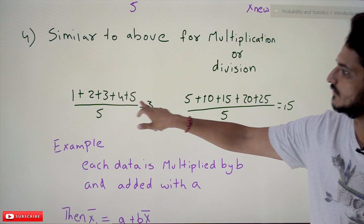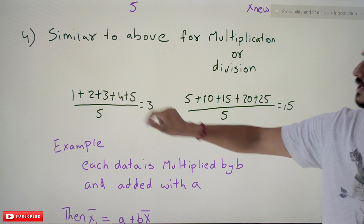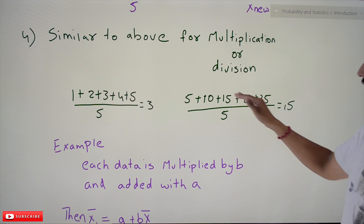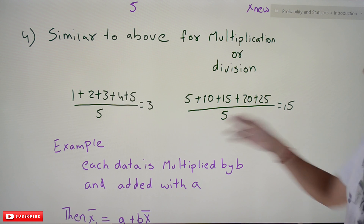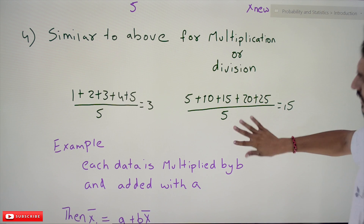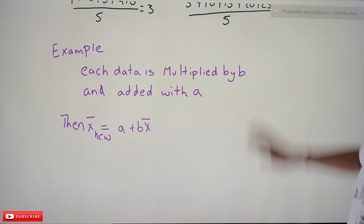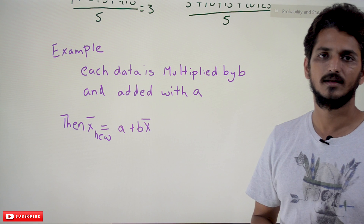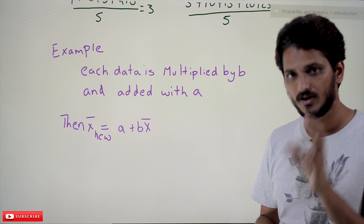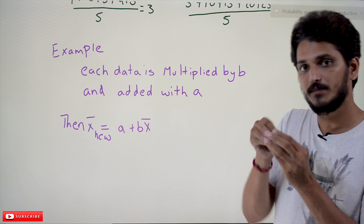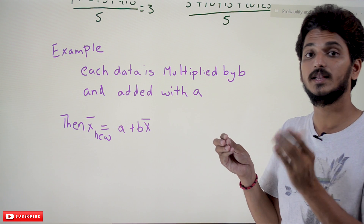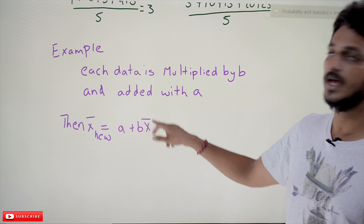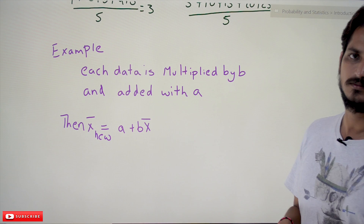For example, 1, 2, 3, 4, 5 has mean 3. Multiplying each by 5: 5, 10, 15, 20, 25 — the new mean is 15, which is 5 × 3. More generally, if each data point is multiplied by b and then a is added, the new mean is x̄_new = a + b·x̄. These are the key properties you need to understand to solve problems.